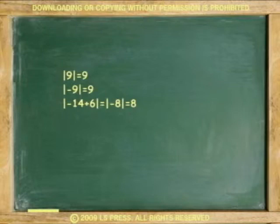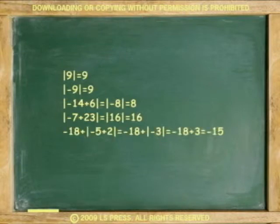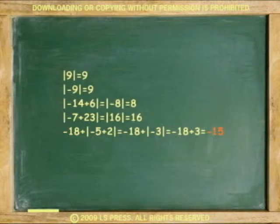Absolute negative 14 plus 6 equals absolute negative 8, which equals 8. Absolute negative 7 plus 23 equals absolute 16, equals 16. Negative 18 plus absolute negative 5 plus 2 equals negative 18 plus absolute negative 3, equals negative 15. Notice that negative 18 is not absolute — no bars. The answer is negative because only negative 3 is inside the bars, and it turns positive.